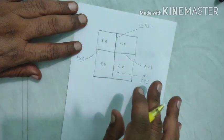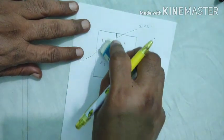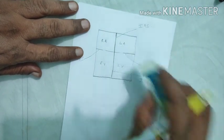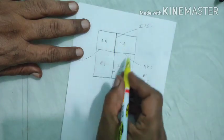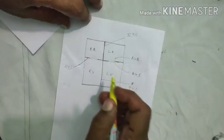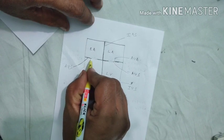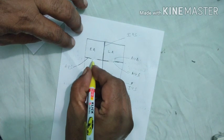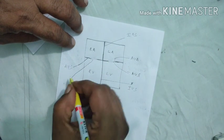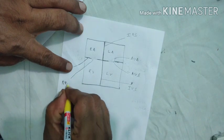These two atrioventricular septa are totally different from the other septa, because this septum has an opening — whereas there is no opening in the interauricular or interventricular septa. This opening in the atrioventricular septum is called the auriculoventricular aperture.